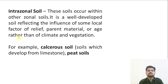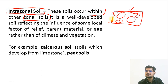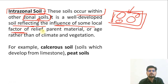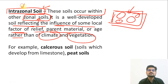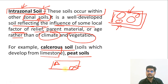Finally, there are intrazonal soils. If there is a zone with variation within it of different soils, it is intrazonal. These soils occur within other zonal soils and are well-developed, reflecting the influence of some local factor of relief, parent material, or age rather than climate and vegetation. The major difference between zonal and intrazonal soil is that intrazonal soils are in the same zone but more influenced by parent material or relief. For example, calcareous soils that develop from limestone are intrazonal soils.